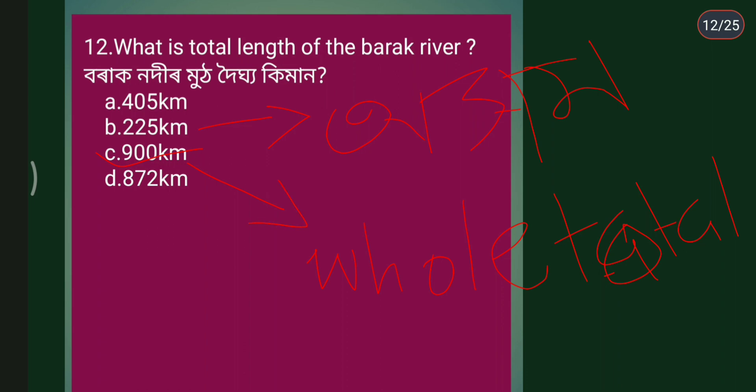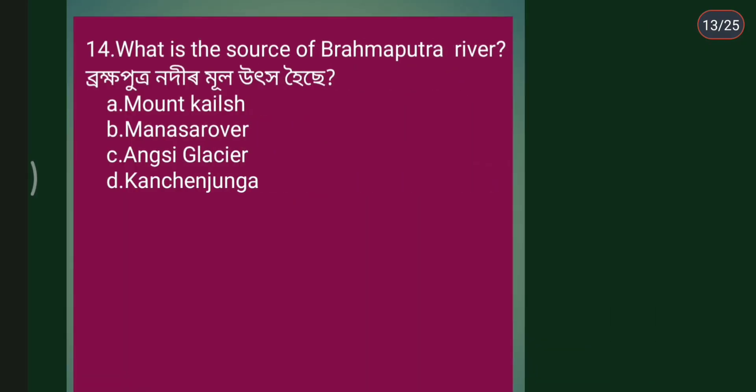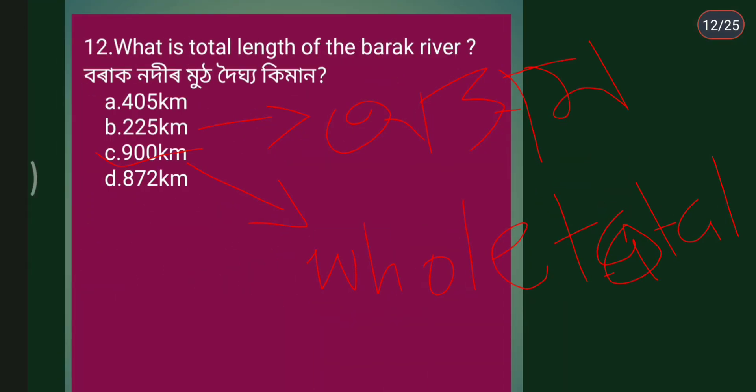Next question: What is the source of Brahmaputra river? The answer is Chemayungdung glacier near Mansarovar. The source of Brahmaputra is this glacier.